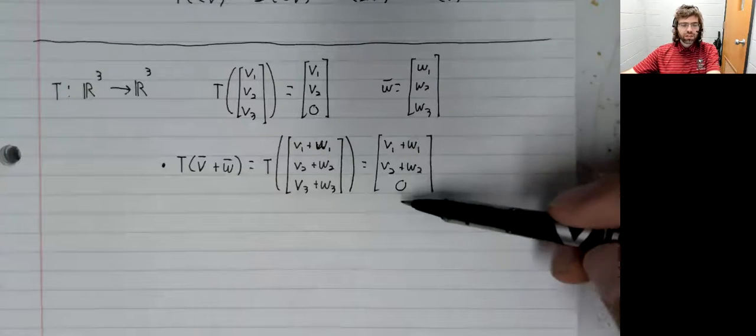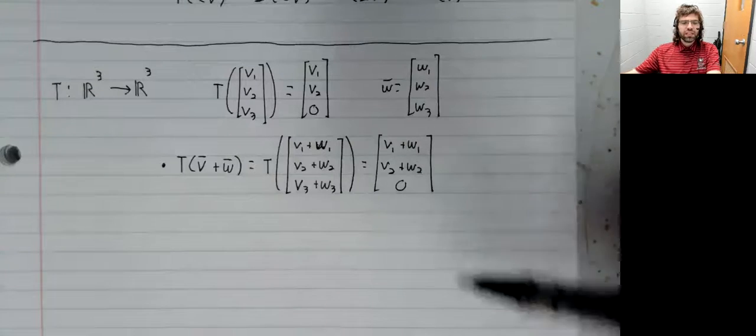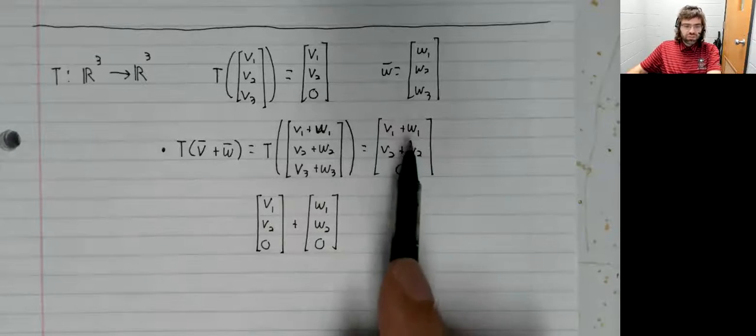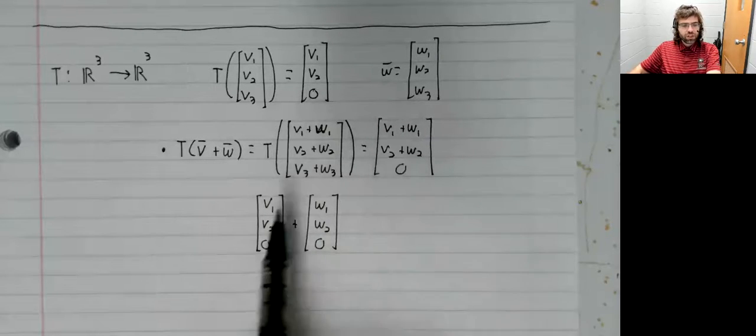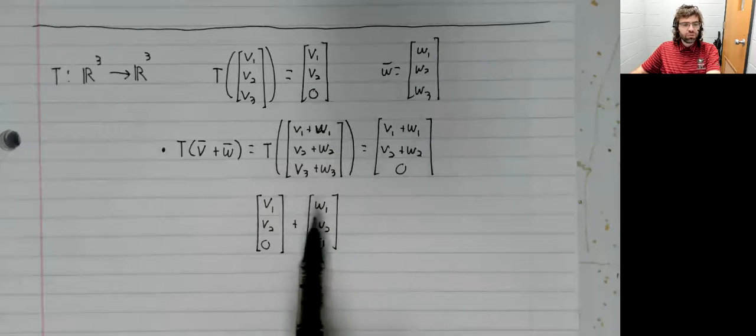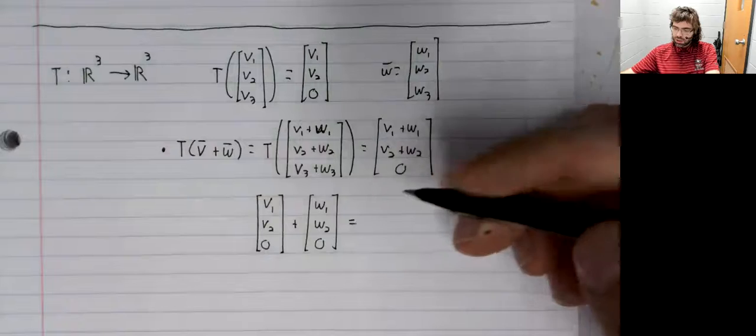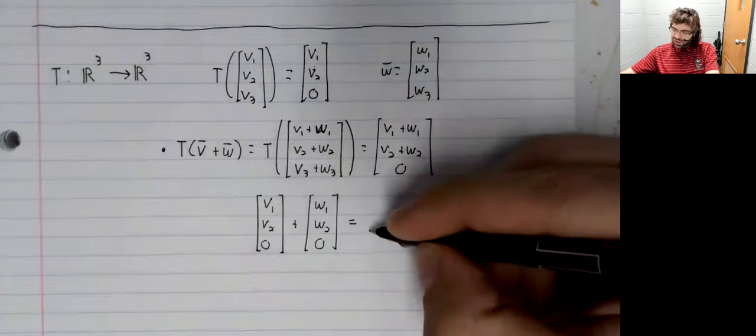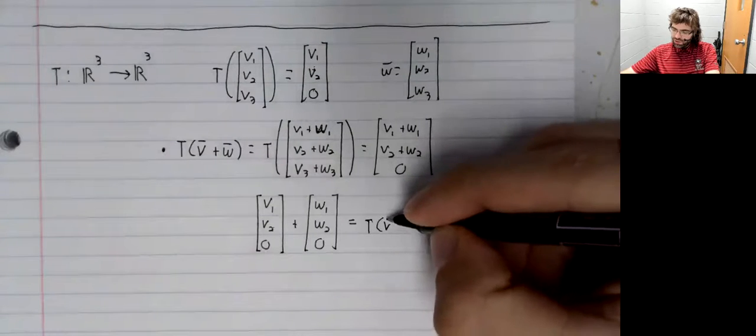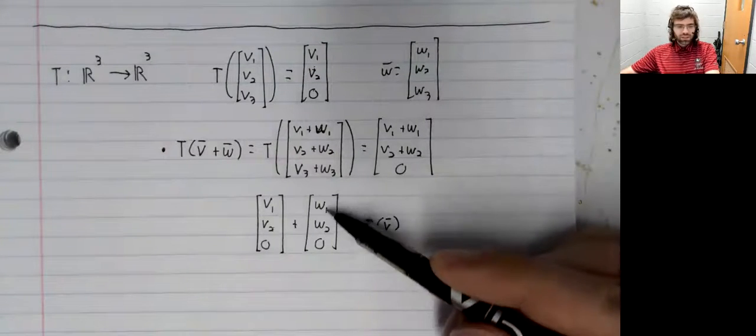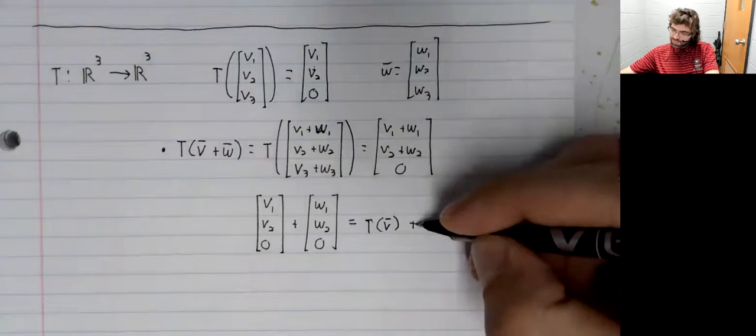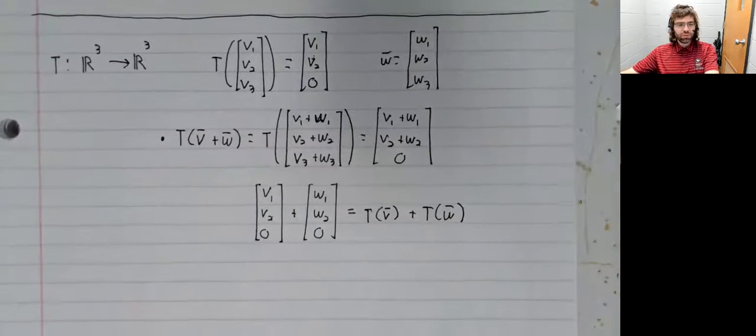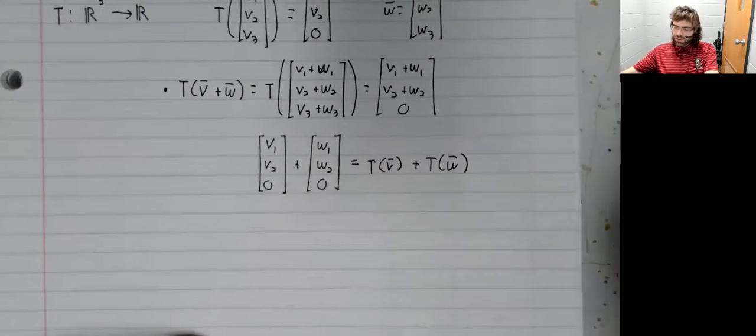We'll take this vector and we can break it into two. This single vector equals the sum of these two vectors. And this, you see up here, this really is T of v. And similarly, this is T of w. So we have the first condition.